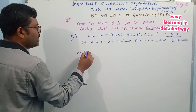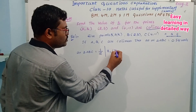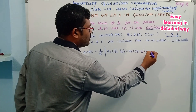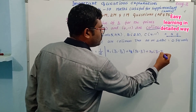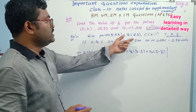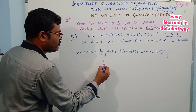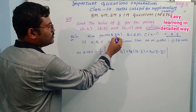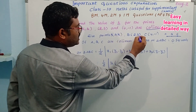Given points: let A be k comma k, B be 2 comma 3, and C be 4 comma minus 1. These are the three points given. If A, B, C are collinear, then area of triangle ABC is equal to zero square units. Therefore, area of triangle ABC — using the formula: half of x1 into (y2 minus y3) plus x2 into (y3 minus y1) plus x3 into (y1 minus y2).